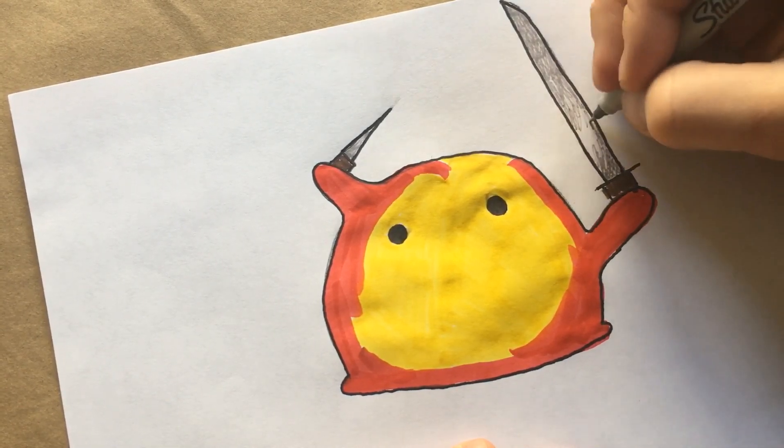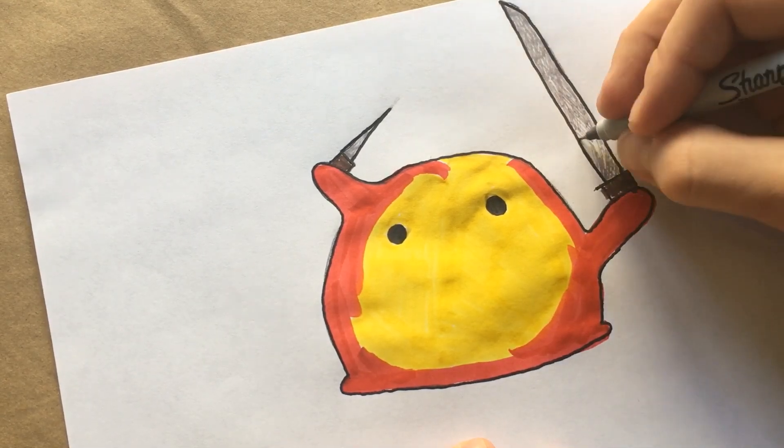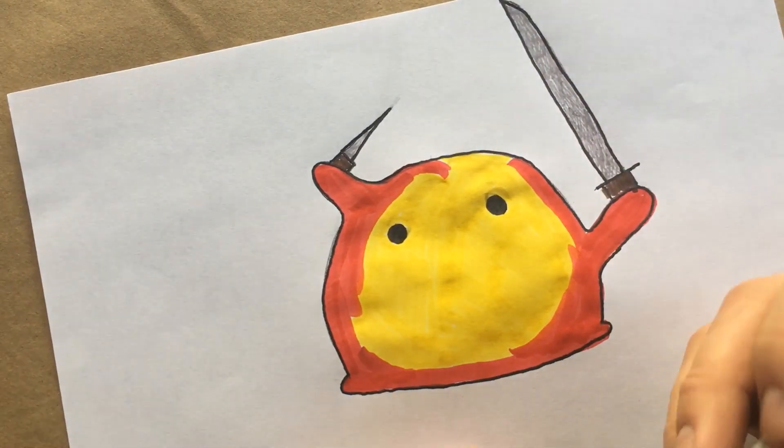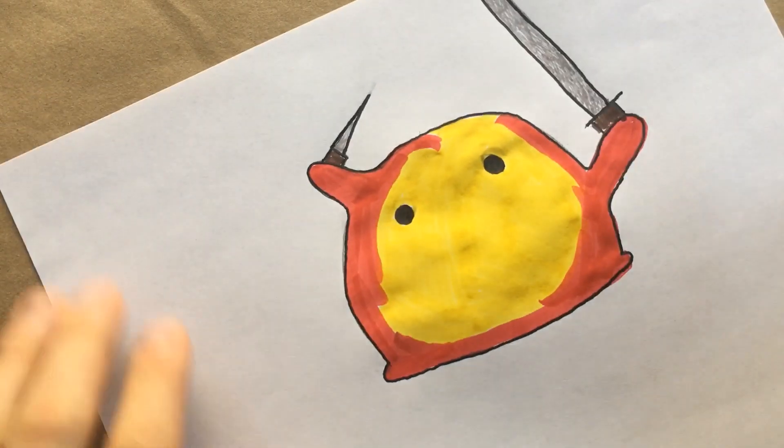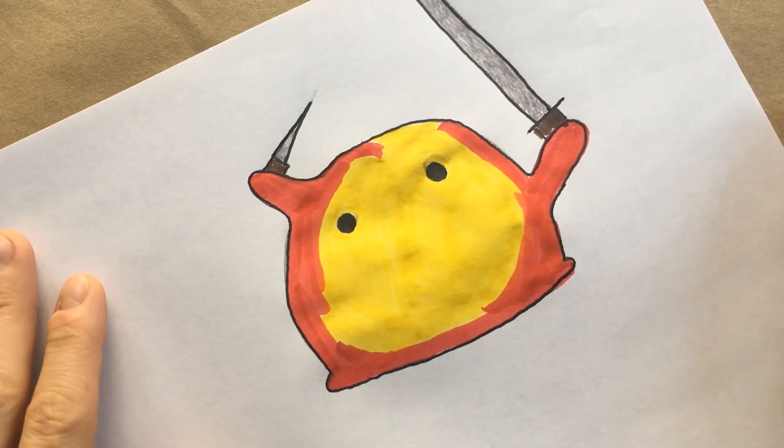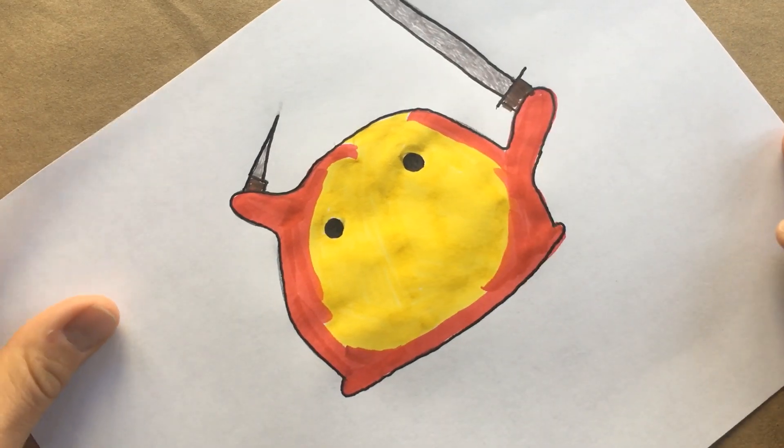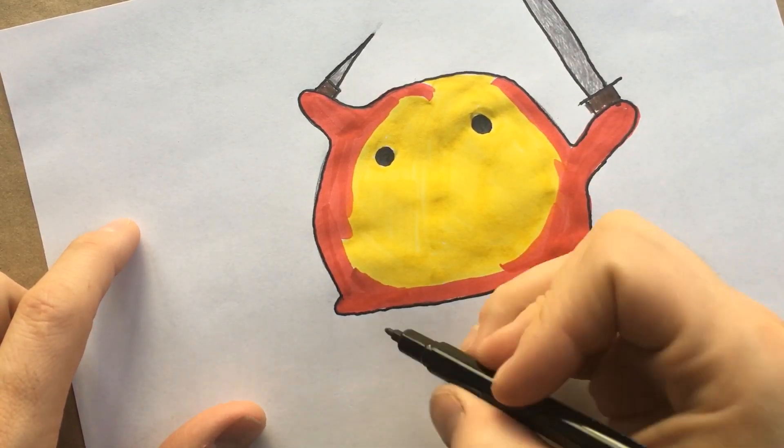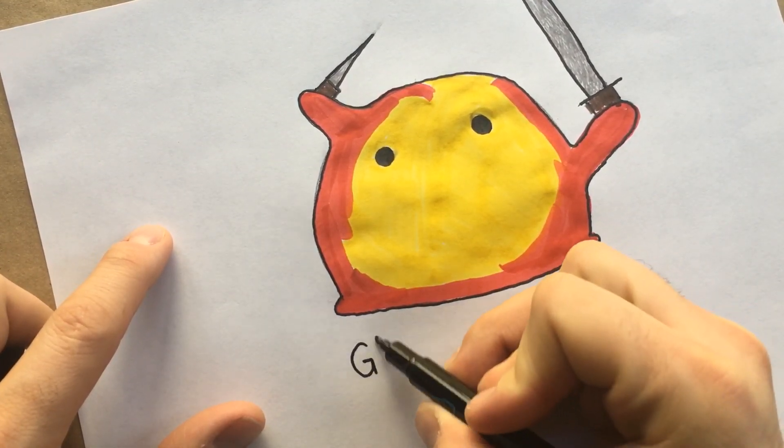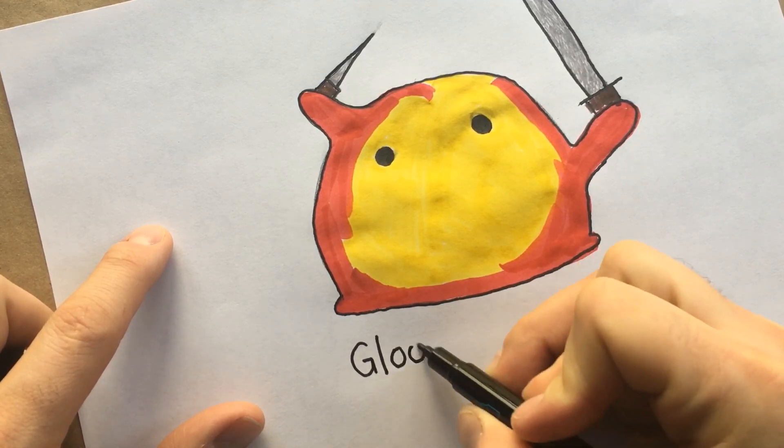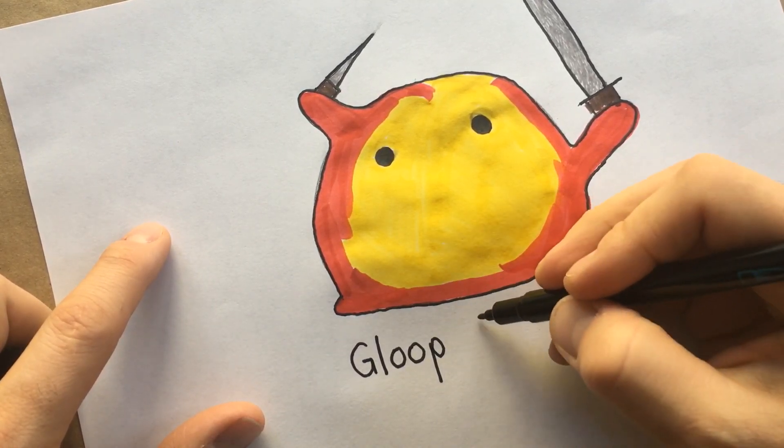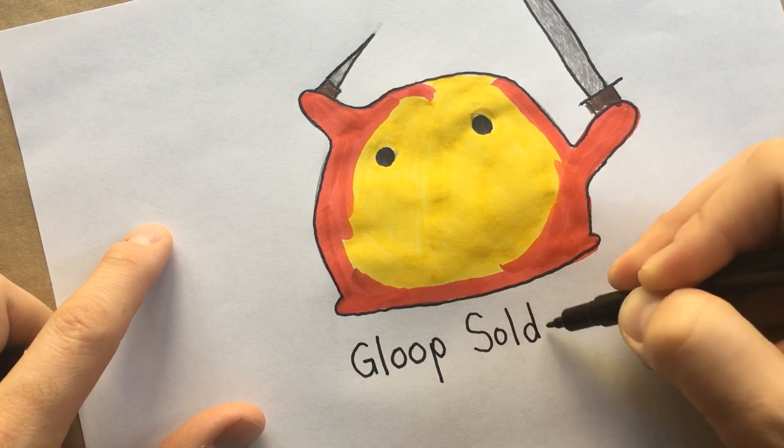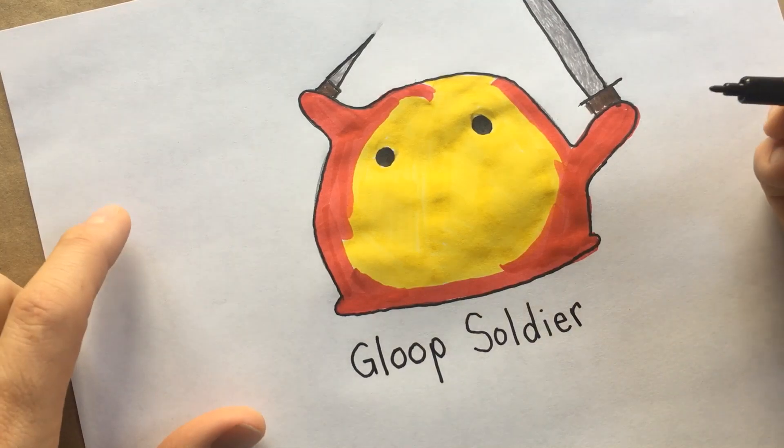Once I'm done drawing and coloring, I really like to label my drawings, especially when it's just one thing or one creature. I'm going to get my marker here and write underneath. Just like the other one, it said gloop soldier. I'm going to write G-L-O-O-P and then soldier starts with an S, O-L-D-I-E-R. And there's our gloop soldier. Looks pretty cute but it's actually quite menacing.